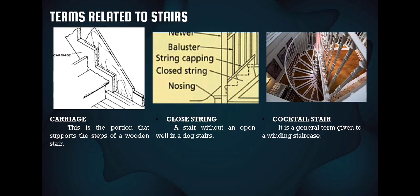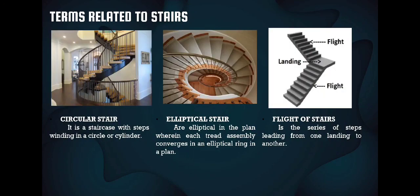The carriage is the portion that supports the steps of a wooden stair. A closed string is a stair without an open well in the dog-leg stairs. A cocktail stair is a general term for a winding staircase. A circular stair is a staircase with steps winding in a circle or cylinder. An elliptical stair is elliptical in plan, wherein each tread assembly converges in an elliptical ring. A flight of stairs is a series of steps leading from one landing to another.